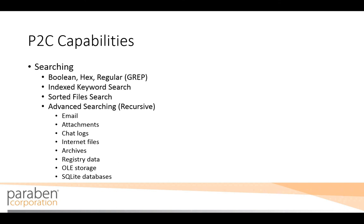You can also search through chat logs, internet files, archives, registry data, OLE storage, and SQLite databases. The recursive searching and sorting features of P2C are one of my personal favorites, because the data is being analyzed more thoroughly and you're less likely to miss something buried in an email attachment, a zip file, etc. In fact, I've seen pictures sorted out of command line steganography created files using the recursive sorting feature from OLE storage.